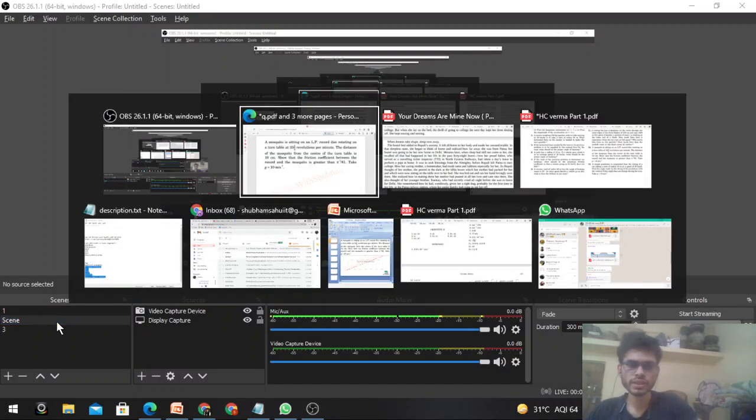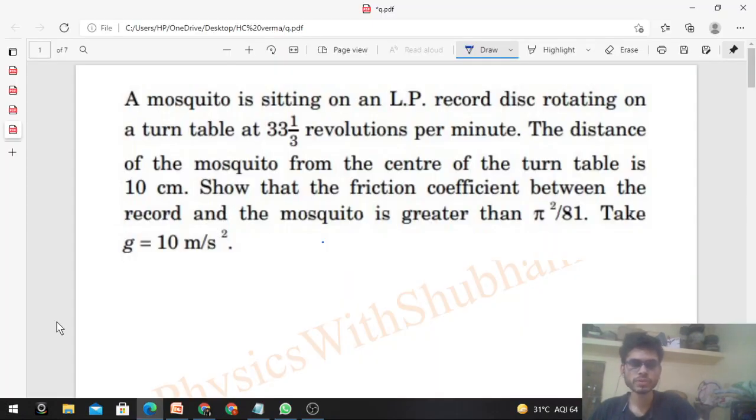Okay, hi everyone. Today let's discuss this interesting problem. A mosquito is sitting on an LP record disc rotating on a turntable at 33⅓ revolutions per minute. The distance of the mosquito from the center of the turntable is 10 centimeters. Show that the friction coefficient between the record and the mosquito is greater than π²/81, and take the value of g as 10 m/s².